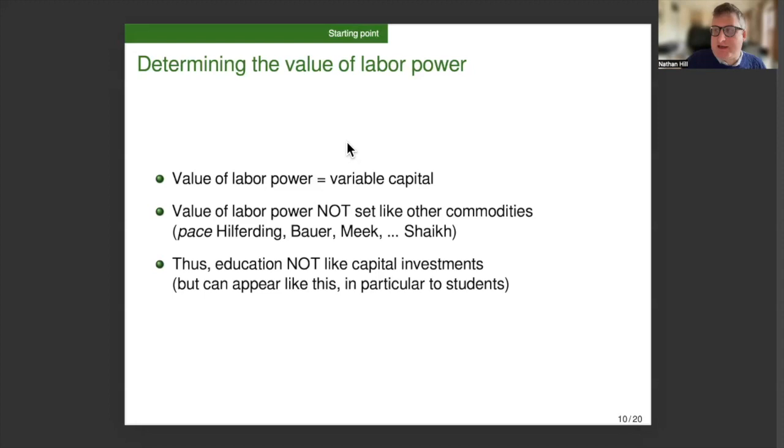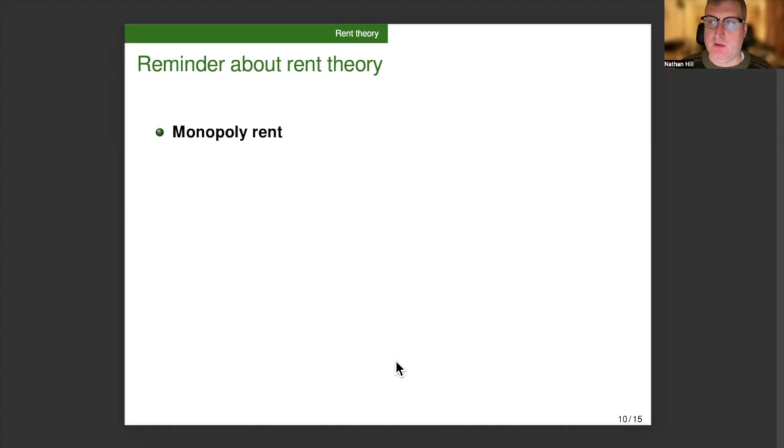Now, there are reasons why, from the perspective of an individual laborer, things have the appearance of, to use a more contemporary phrase, human capital. This idea that you invest in your education and then you get higher income is not wrong, but it's a surface appearance. So now I turn to the core of the presentation about applying rent theory to wage determination.